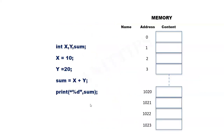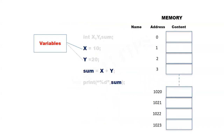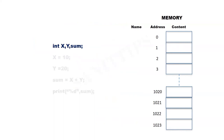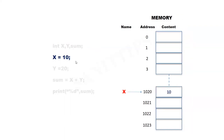Let us examine this program segment. Within this segment, x, y, and sum are variables. When the declaration is executed, three memory locations will be allocated with the names x, y, and sum. For example, x, y, and sum are associated with memory locations 1020, 1, and 1022 respectively. When x equal to 10 is executed, the value 10 will be placed in memory location 1020. Similarly, when y equal to 20 is executed, the value 20 will be placed in memory location with address 1.